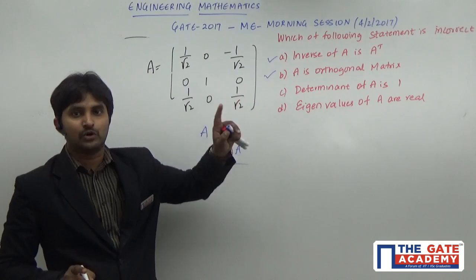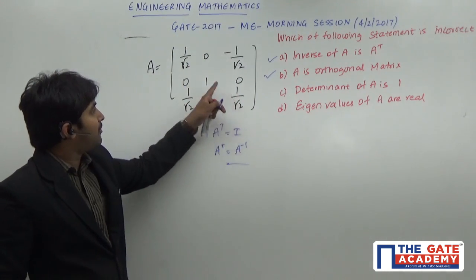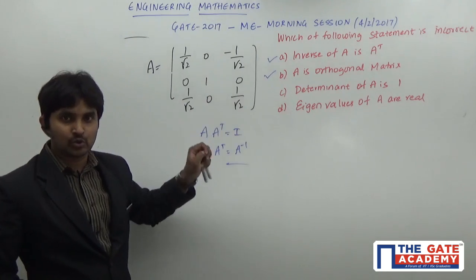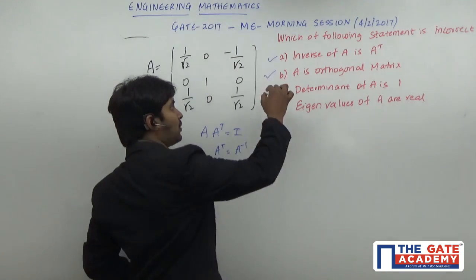the determinant equals 1: (1/√2)×(1/√2) - (-1/√2)×(-1/√2) = 1. So all three options are correct.